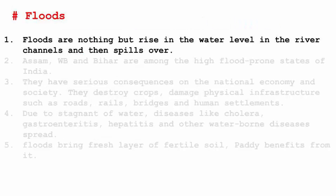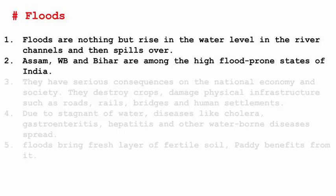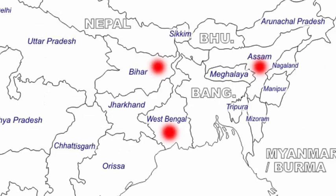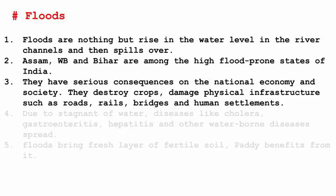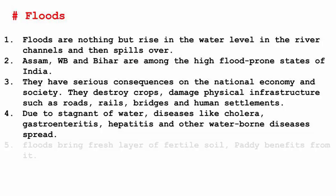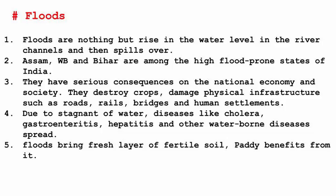The fourth type of disaster is floods. Floods are a rise in the water level in river channels that then spills over — caused by rain or melting of snow. Since riverbeds are never perfectly straight, water can spill over at every turn. Some of the places in India that face high floods are Assam, West Bengal, and Bihar. Floods have serious consequences on the national economy and society — they destroy crops, damage physical infrastructure such as roads, rails, and bridges, and damage human settlements. Stagnant floodwater causes diseases such as cholera, hepatitis, and other waterborne diseases. One positive effect of floods is they bring a fresh layer of fertile soil, benefiting crops like paddy, but these benefits are insignificant compared to the grave losses.